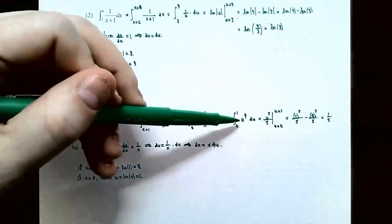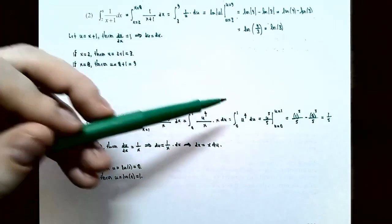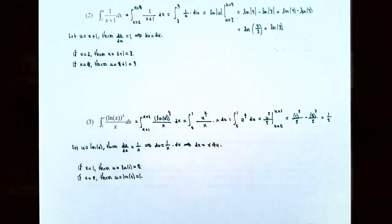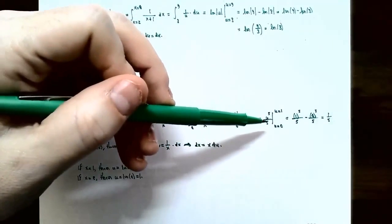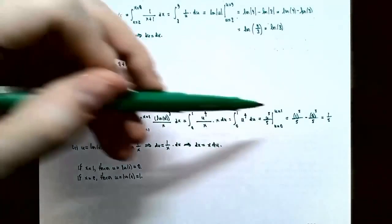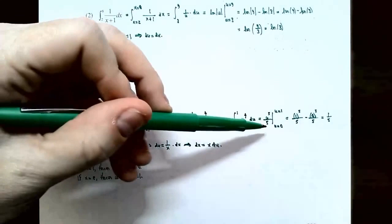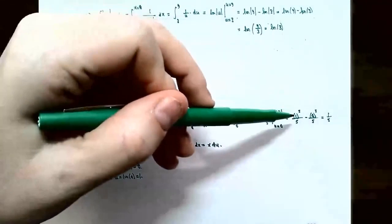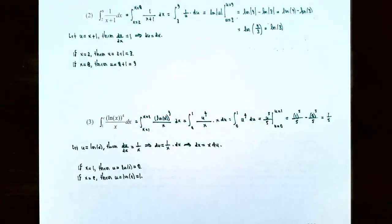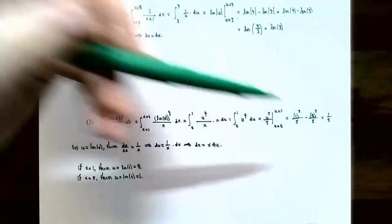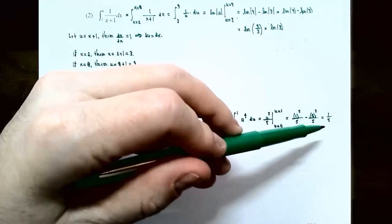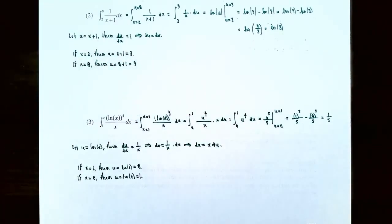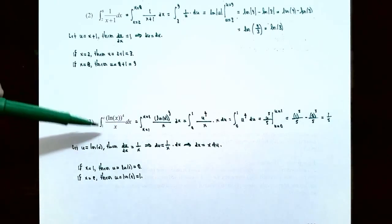Since the variable and variable of integration are both u, it's a power function — add 1 to the exponent and divide by the new exponent to get u to the fifth divided by 5. Using the fundamental theorem of calculus, evaluate at u equals 1 and u equals 0. Plugging in u equals 1: 1 to the fifth divided by 5 equals 1/5. Subtracting for u equals 0: 0 to the fifth divided by 5 equals 0. The result is 1/5. That's the value of the area under the curve of (natural log of x) to the fourth power divided by x, from x equals 1 to x equals e.